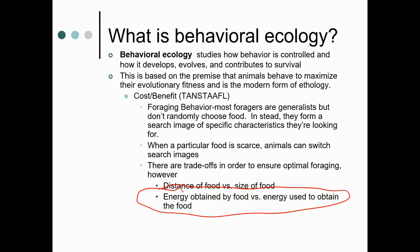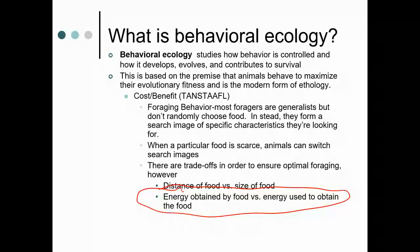For foraging behavior, it's really about energy — maximizing the energy obtained from food while minimizing the energy expended to get it. Most foragers are generalists, but food is not chosen randomly. When fruits are abundant, they provide maximum sugar and energy for very little output, so animals forage for fruits more often. When fruit goes out of season and becomes scarce, animals switch to a different search image, like vegetation, which offers less energy. They understand they need to eat something, so they switch to the next best option. There are always trade-offs to ensure optimal foraging.